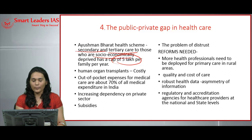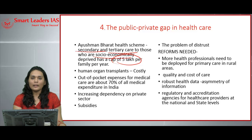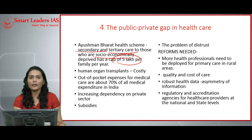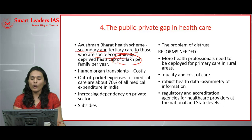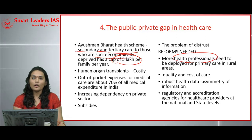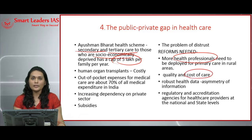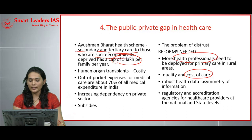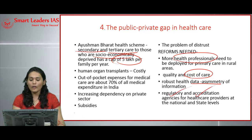The subsidies given by the government to private sectors come from taxpayers' money, yet the people who benefit are from the upper economic strata. There is also a problem of distrust — people trust doctors in private hospitals but fail to trust government hospital doctors, even though they are similarly educated. These problems call for reforms: more health professionals deployed in primary care especially in rural areas where 70% of India's population resides, enhanced quality in government hospitals, reduced costs in private hospitals, a uniform patient database to address data asymmetry, and regulatory and accreditation agencies at both national and state levels.